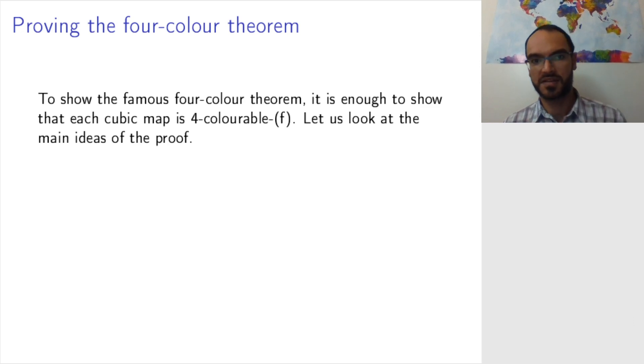Let's look at some ideas that lay behind the proof of the four-color theorem. The four-color theorem is the statement that any simple planar graph is four-vertex colorable, and by the previous lectures we have reduced this to the statement that every cubic map is four-face colorable.